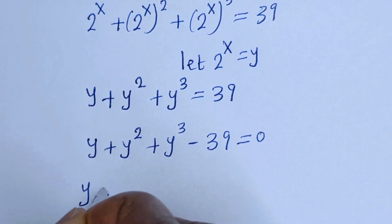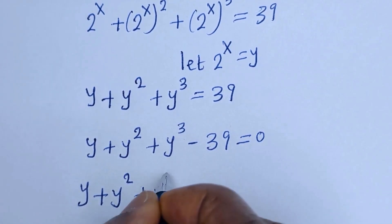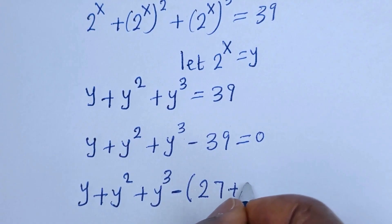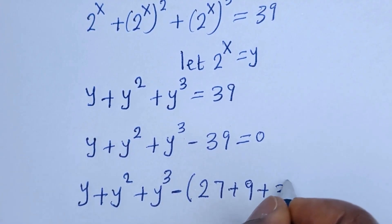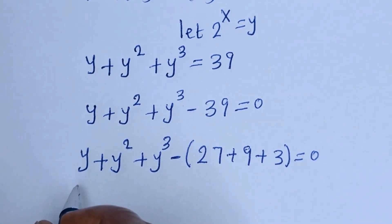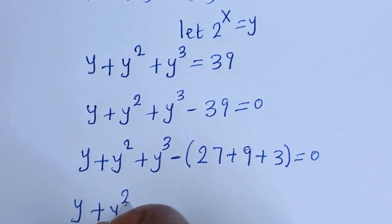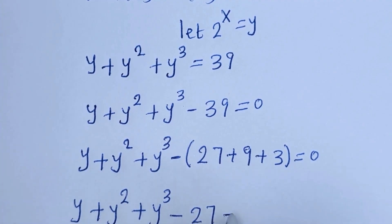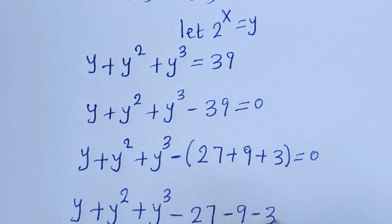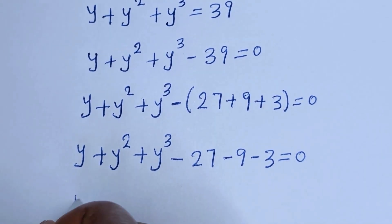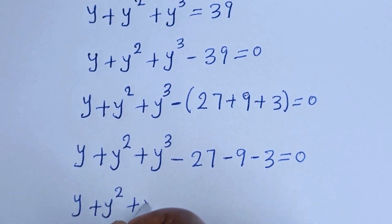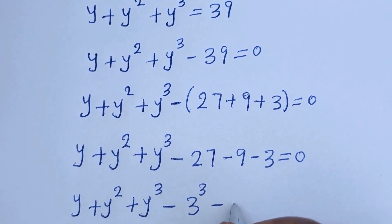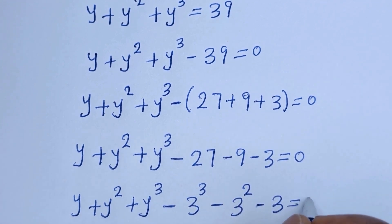Here we have y plus y squared plus y raised to power 3 minus 39, which can be written by substituting 39 as 27 plus 9 plus 3. Opening the bracket with the minus: minus 27 minus 9 minus 3 equals 0. So we have y minus 3 plus y squared minus 9, which is 3 squared, plus y raised to power 3 minus 27, which is 3 raised to power 3, equals 0.